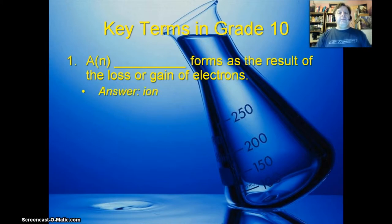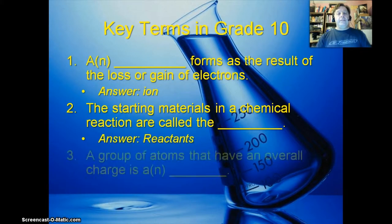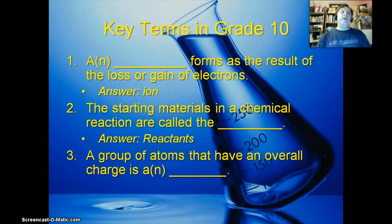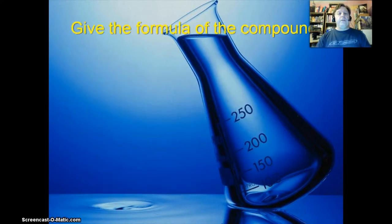A blank forms as a result of the loss or gain of electrons. That's an ion. The starting material in a chemical reaction are called the reactants. A group of atoms that have an overall charge is known as a polyatomic ion.